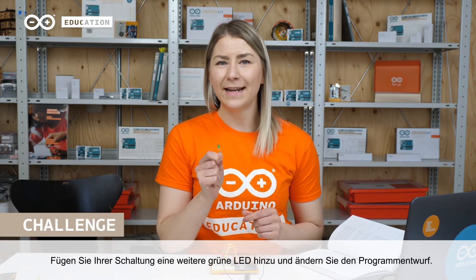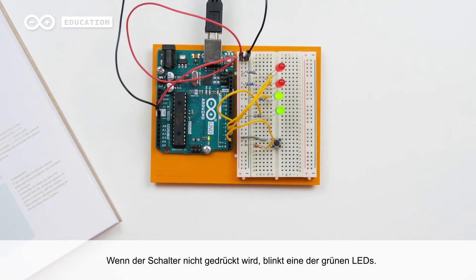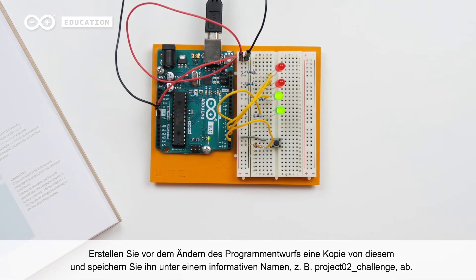Try adding one more green LED to your circuit and modify the example sketch so that when the switch is not pressed, one of the green LEDs will blink. Before modifying the sketch, make a copy of the example sketch and save it using an informative name, for example 'project 2 challenge'.